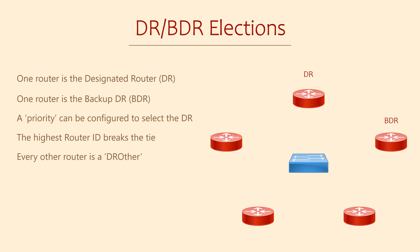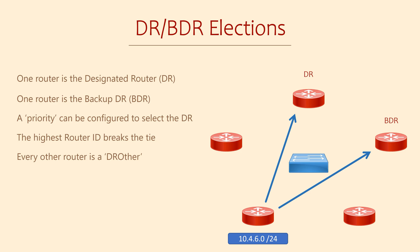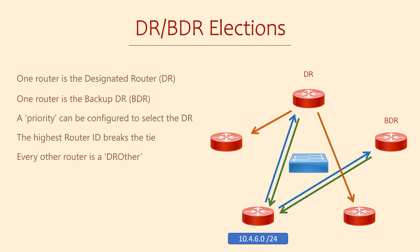If a DR fails, the BDR is promoted, and then one of the DROthers will be promoted to BDR. When a router adds a new network and sends out the LSAs, they aren't sent to every neighbor. Instead, they're only sent to the DR and BDR. This uses multicast address 224.0.0.6, which only the DR and BDR listen to. They will then use an LSR to request more information as normal. The DR will then distribute this information out to the other routers — the DROthers — on the network. This cuts down the number of OSPF messages on a broadcast network.